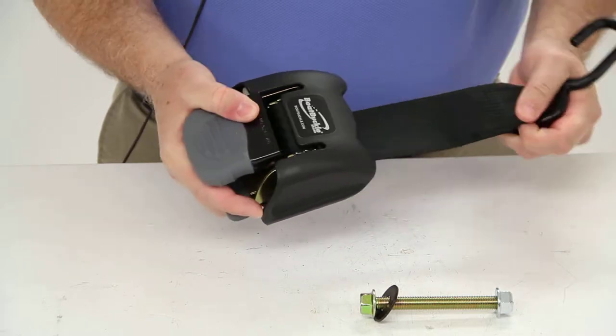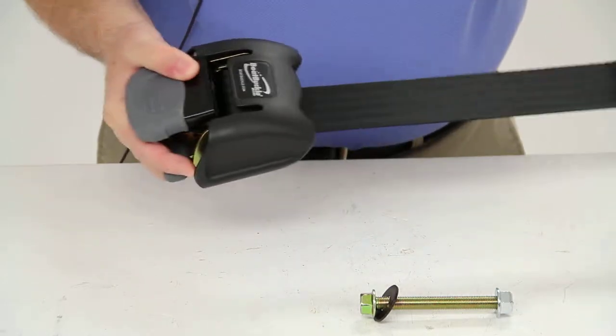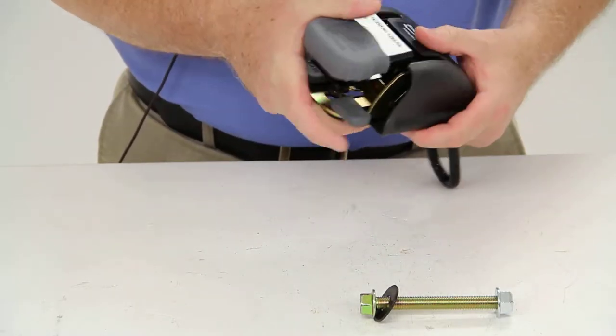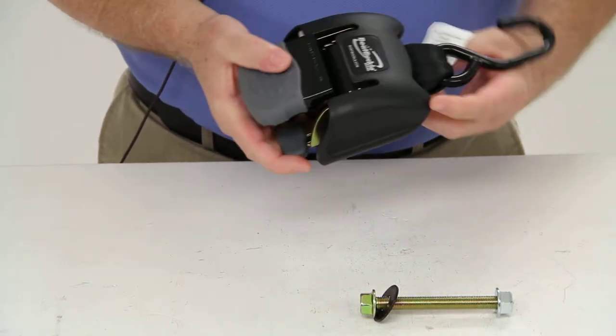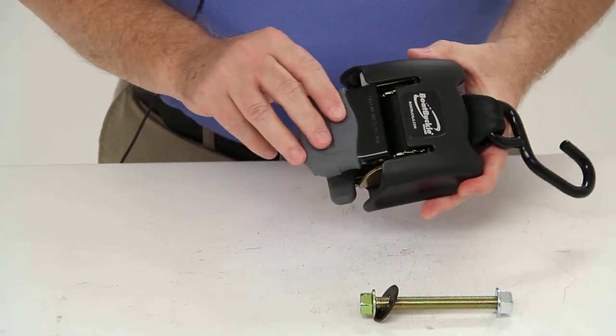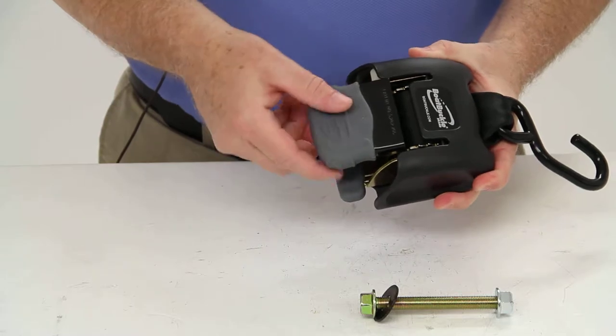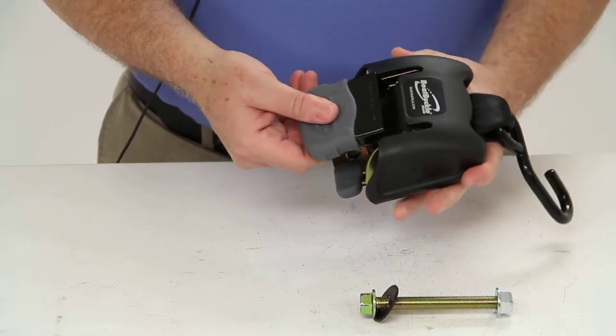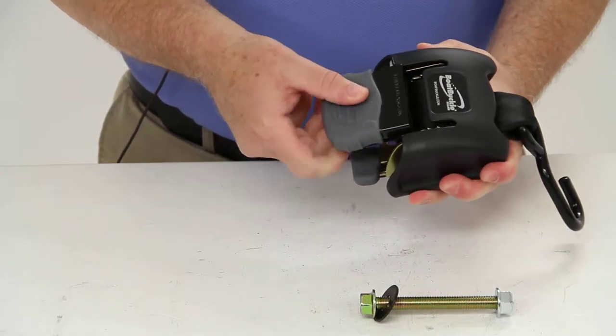This ratcheting strap is simple to hook up and retracts automatically and will offer a permanent mount. It will tighten down easy with the SureGrip rubber-coated handle, which makes it easy to grip and control with one hand.